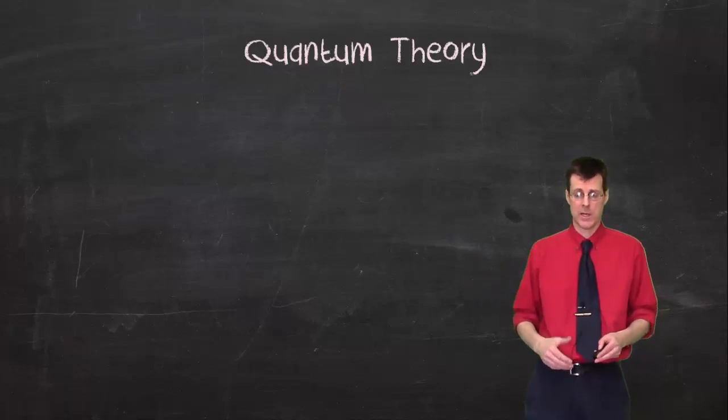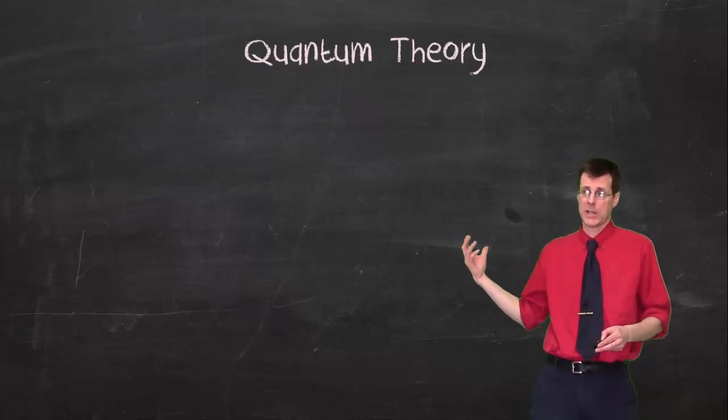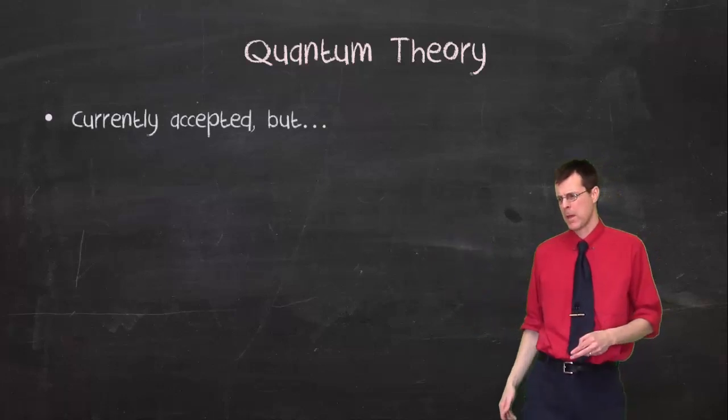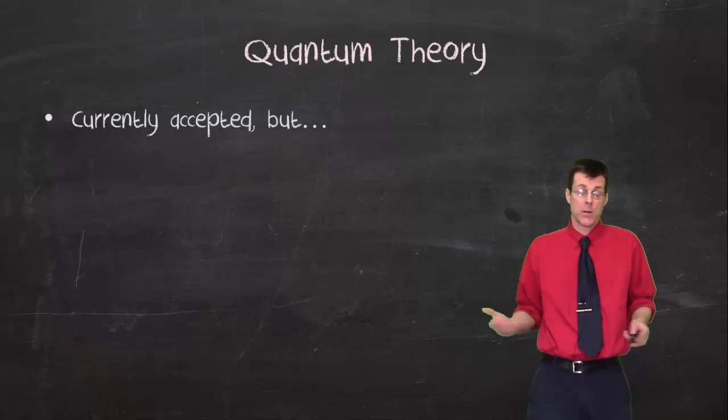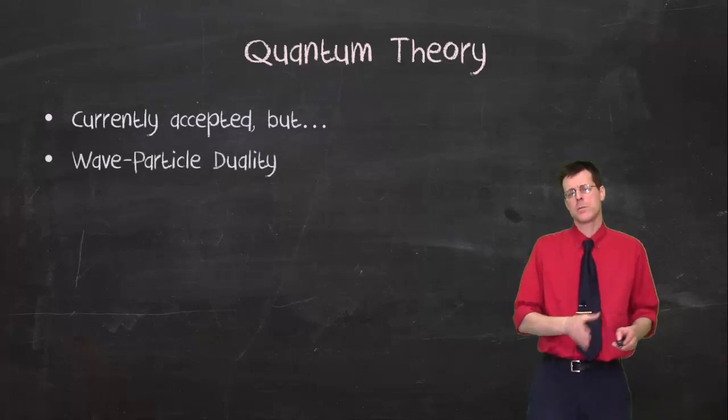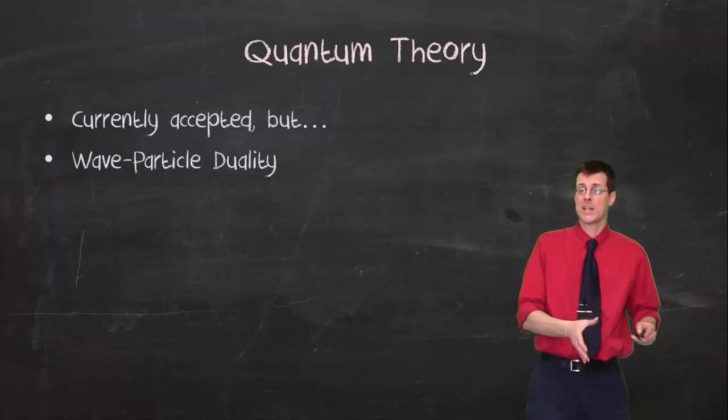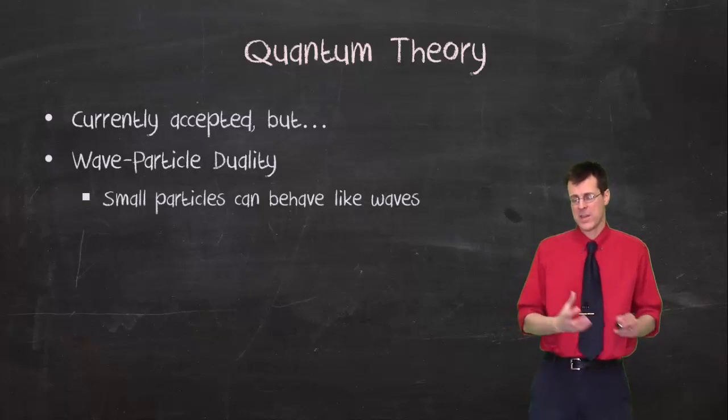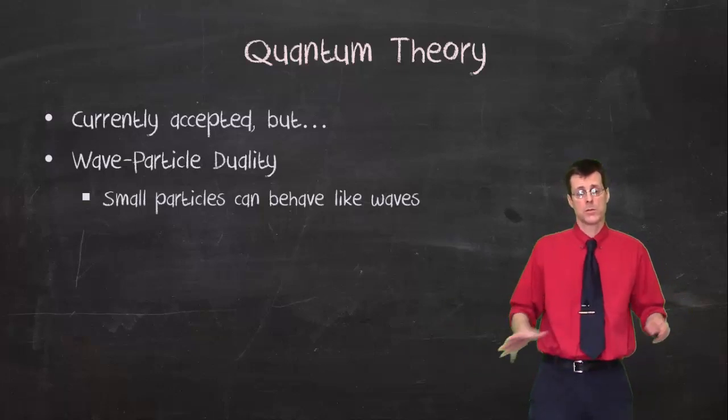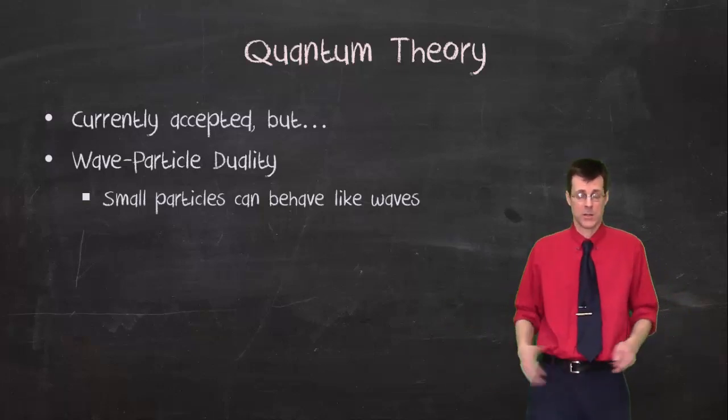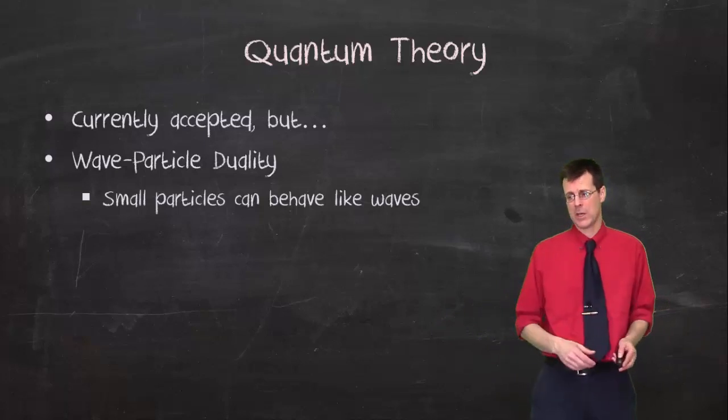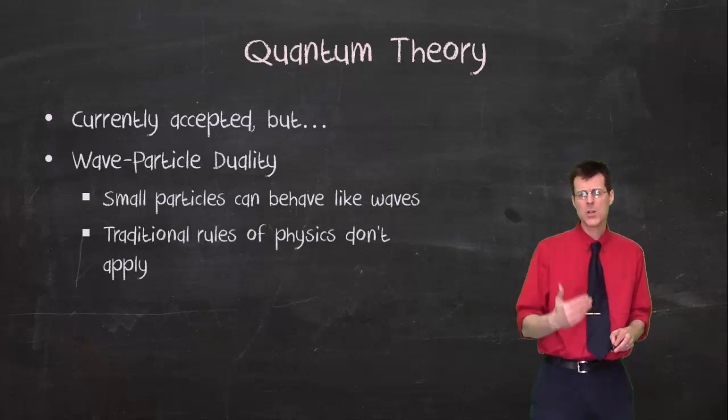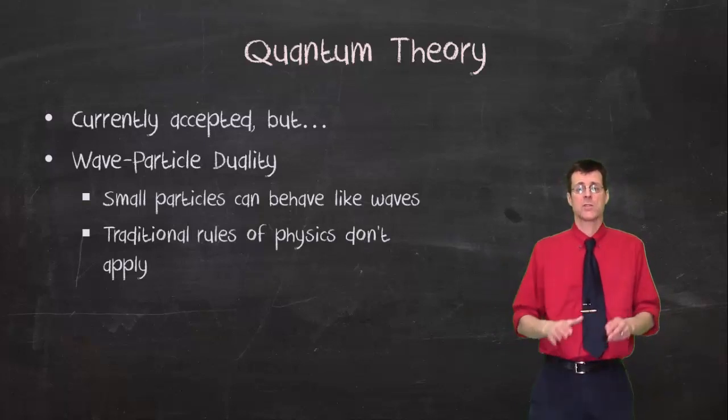Quantum theory. This is where we want to start writing things down. It is currently accepted model of the atom. It uses something called wave-particle duality, which was, at its time, a revolutionary, highly controversial idea that said that small particles, these are things that have mass and they're made of stuff, they can behave like waves. And at the time, scientists thought that waves were waves and particles were particles and waves were just energy and particles could have energy in kinetic form, but they couldn't behave like waves. So it was a very revolutionary idea.